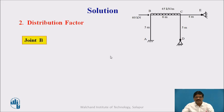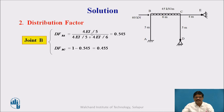Then we calculate the distribution factors. For joint B, the distribution factor BA is the stiffness of BA divided by stiffness of joint B, which comes out to be 0.545. For BC, since the summation of all distribution factors at any joint is always equal to 1, and we have only two members meeting at joint B, the remaining member is 1 minus 0.545, which is 0.455.